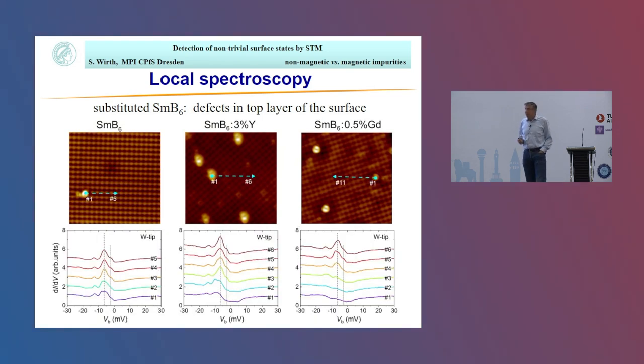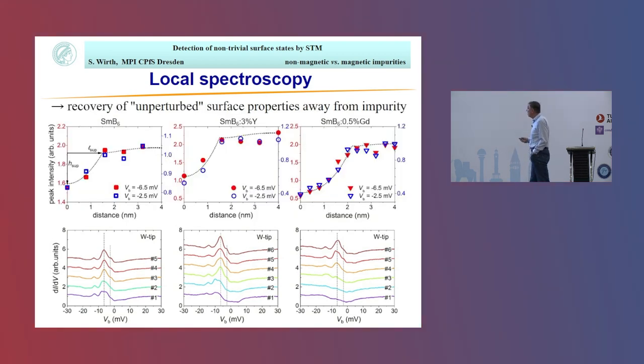These are the surfaces we're going to investigate. On the left-hand side, pure samarium with a defect. This is a 3% yttrium-doped sample and a 0.5% gadolinium-doped sample. If we do spectroscopy, if you're far away from the defect on the clean area, you see the spectroscopy I've shown before. That's common to all these samples, independent of what we doped with. But if you approach the defect, you see that the apex of this peak is a little bit chopped off.